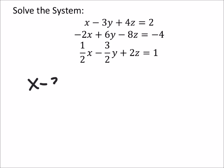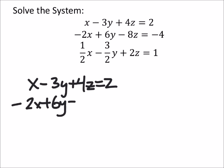So let's do the top two. We got x minus 3y plus 4z equals 2 and the second one is negative 2x plus 6y minus 8z equals negative 4.